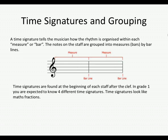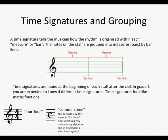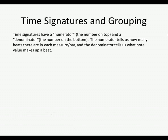In Grade 1 you're expected to know four different time signatures. Time signatures look a little like math fractions. This is 4/4 timing, also called common time — which is the same as 4/4, but because it was such a common time signature they developed a shorthand symbol. This is 3/4 time, and this one is 2/4 time. Time signatures have a numerator, which is the number on top, and a denominator, the number on the bottom.